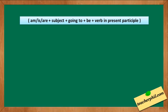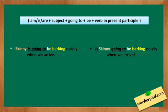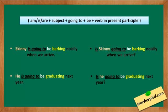For the 'be going to' question pattern, we follow: am/is/are + subject + going to + be + verb in present participle. Examples: 'Skinny is going to be barking noisily when we arrive.' becomes 'Is Skinny going to be barking noisily when we arrive?' 'He is going to be graduating next year.' becomes 'Is he going to be graduating next year?'